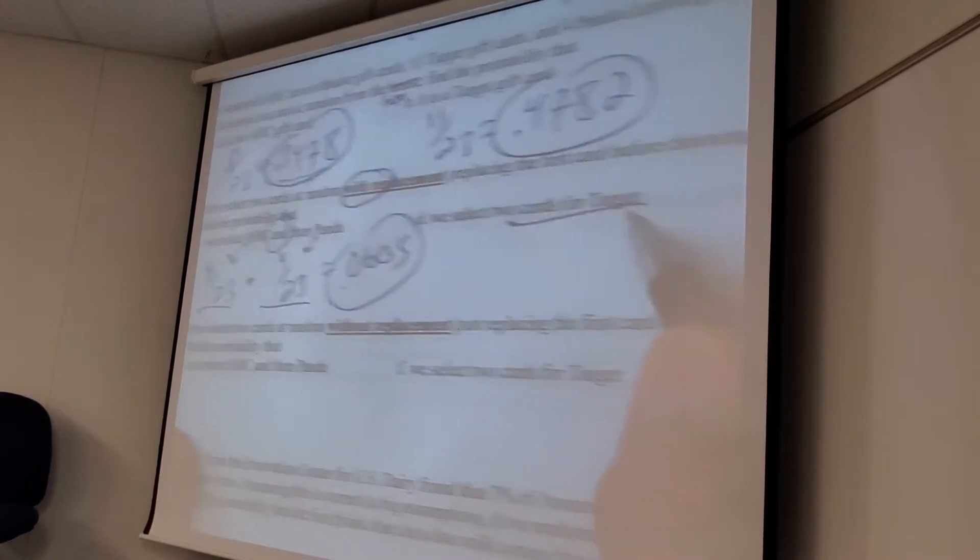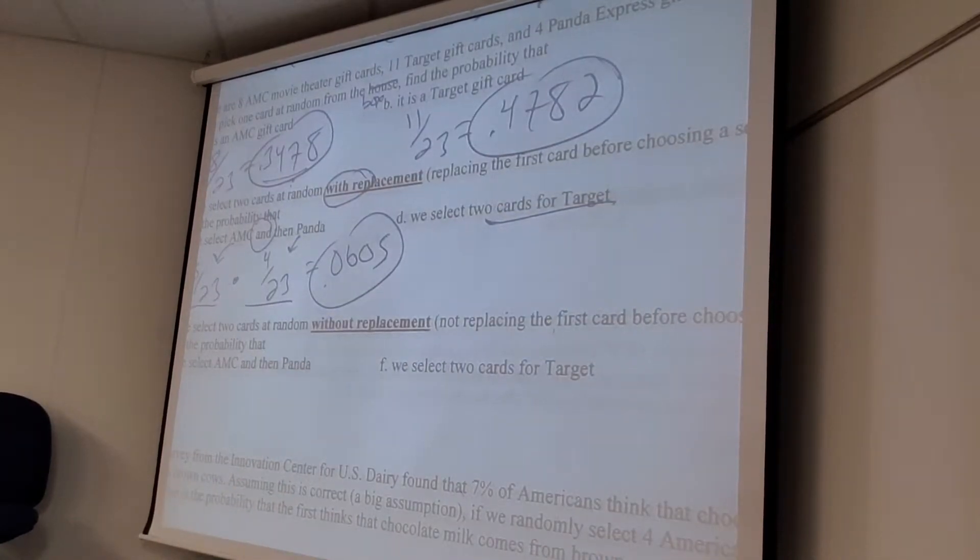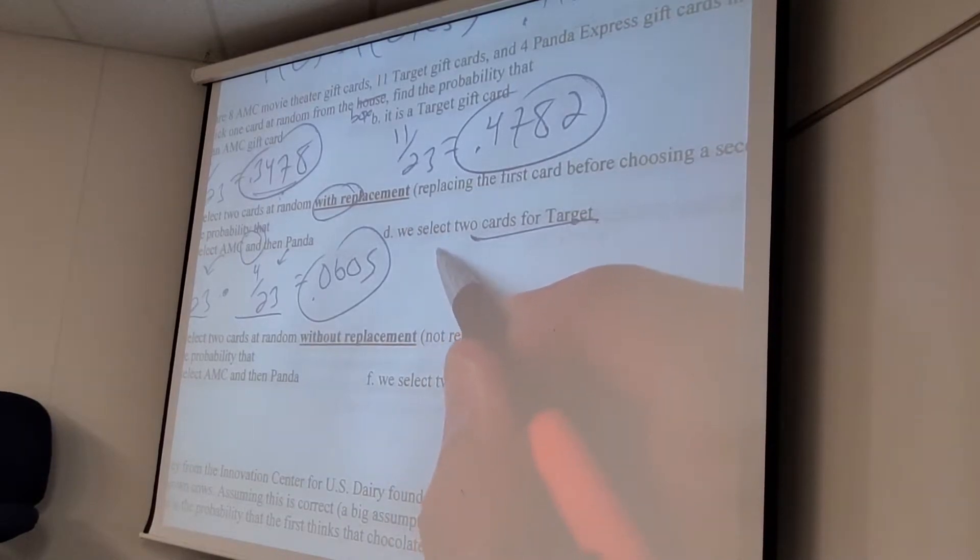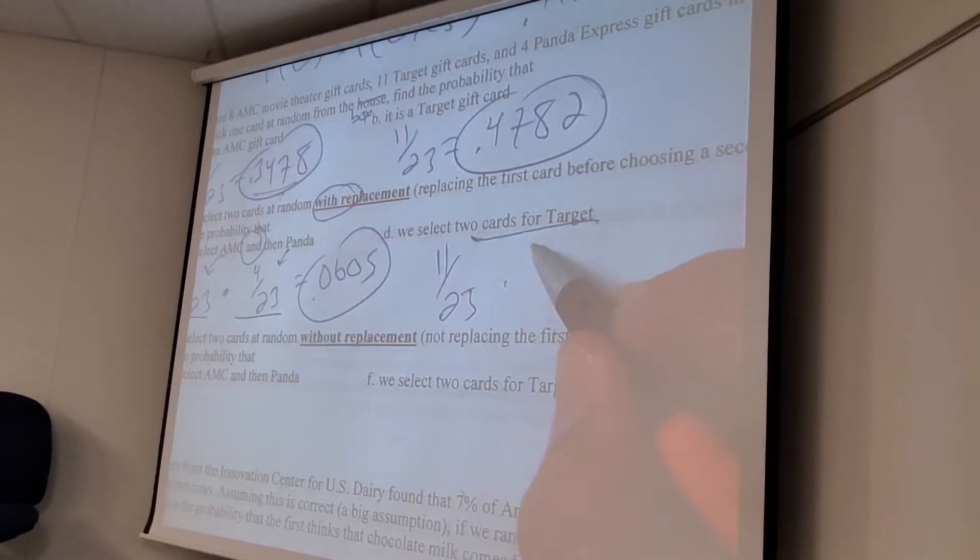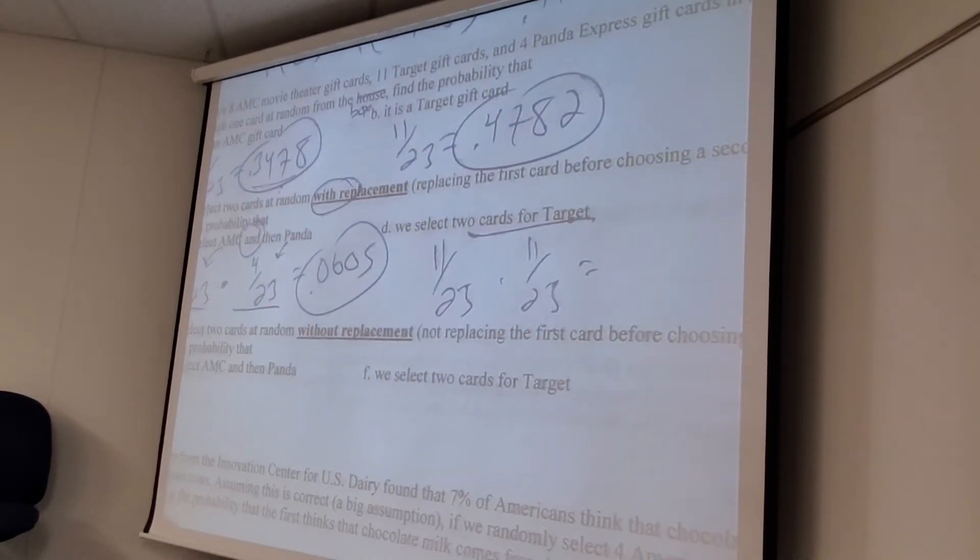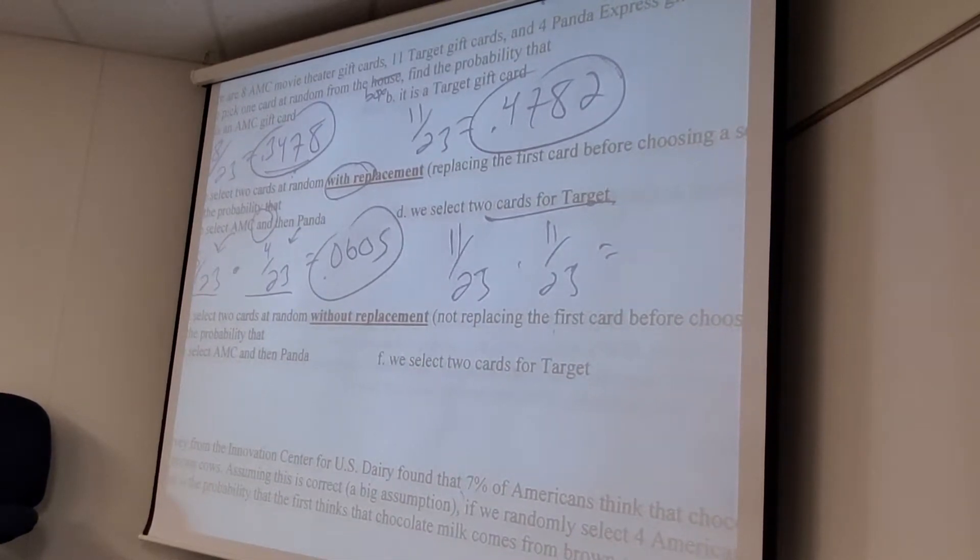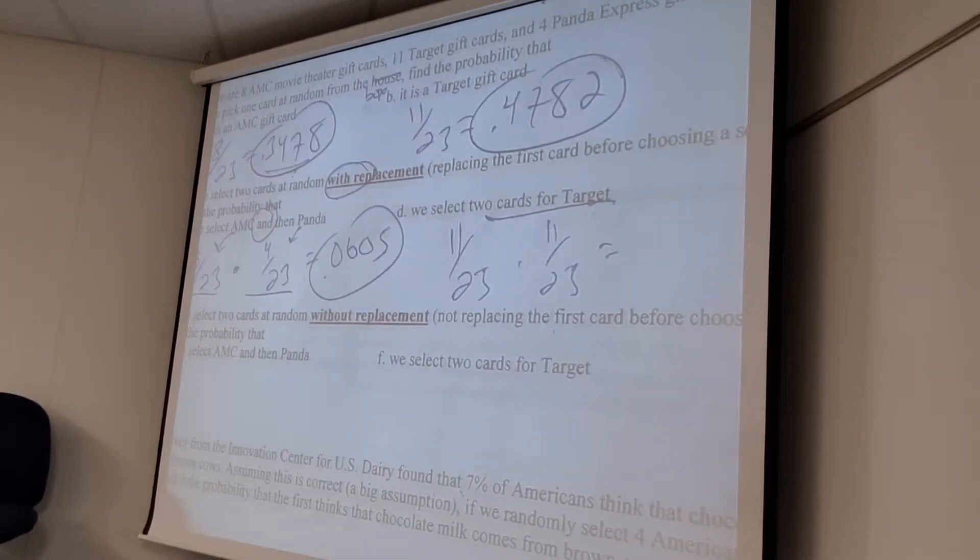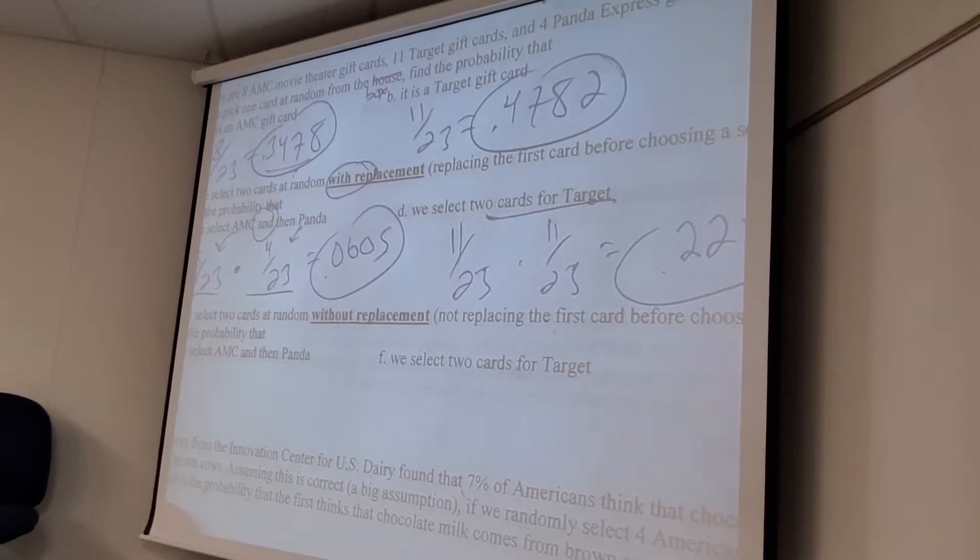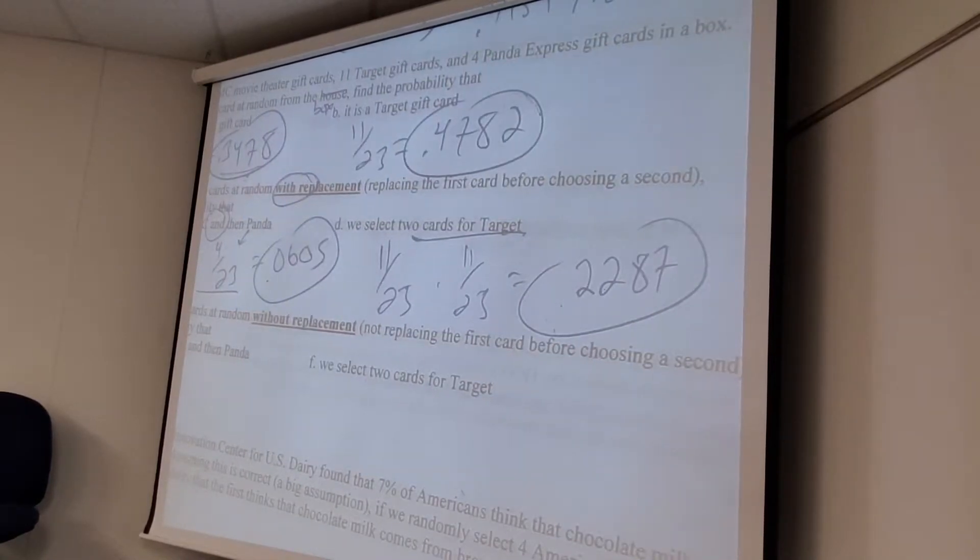And I knew to multiply because I wanted this to happen and then this to happen. Now, here's a good situation where and is hidden. I want a target card and then another target card. So, 11 out of 23 times another 11 out of 23. Nothing changed. I put it back in. And then, you know, whatever that is. Yeah. 11 over 23 squared. Of course. Got it times itself. All good. So, I'm sorry. What did you get again? 2287. 2287. Okay.